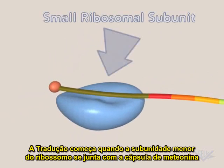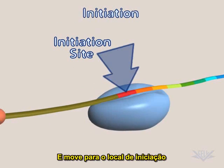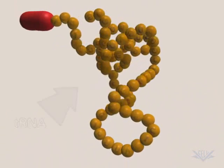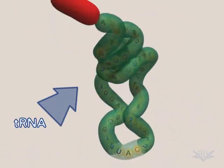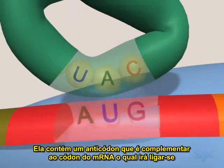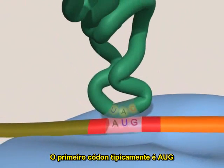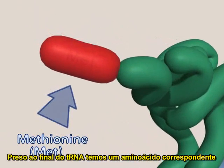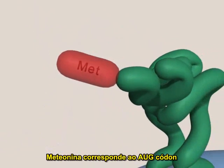Translation initiation begins when the small subunit of the ribosome attaches to the cap and moves to the translation initiation site. tRNA is another key molecule. It contains an anticodon that is complementary to the mRNA codon to which it binds. The first mRNA codon is typically AUG. Attached to the end of the tRNA is the corresponding amino acid — methionine corresponds to the AUG codon.